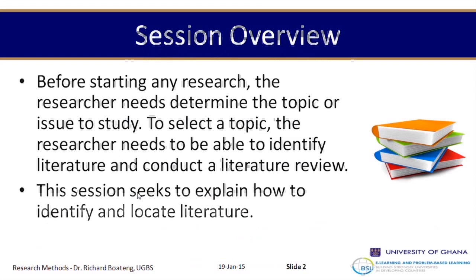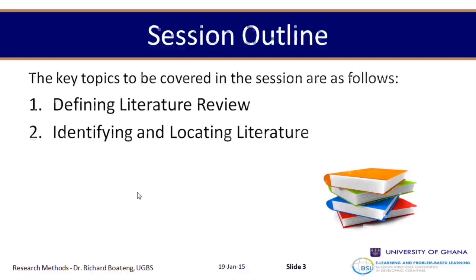Welcome to Research Methods. Last time we met, we were talking about how to do research and how to select a topic. Today we continue by discussing how to start a literature review. Starting a literature review helps us find the available literature that will be relevant to our topic. Any type of research you do, you need to write something about the topic, and to do that, you need to find some literature. In part one, we'll learn how to find literature. Our key topics will be defining literature review, and then identifying and locating literature.